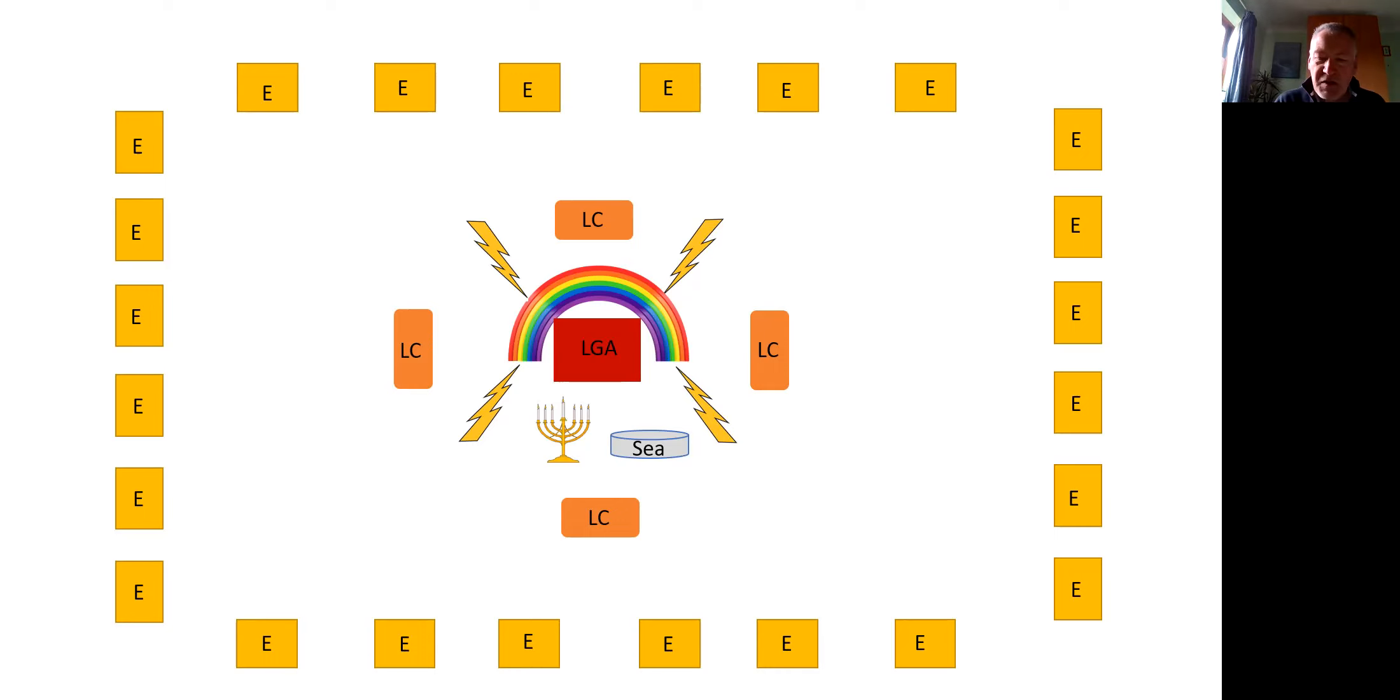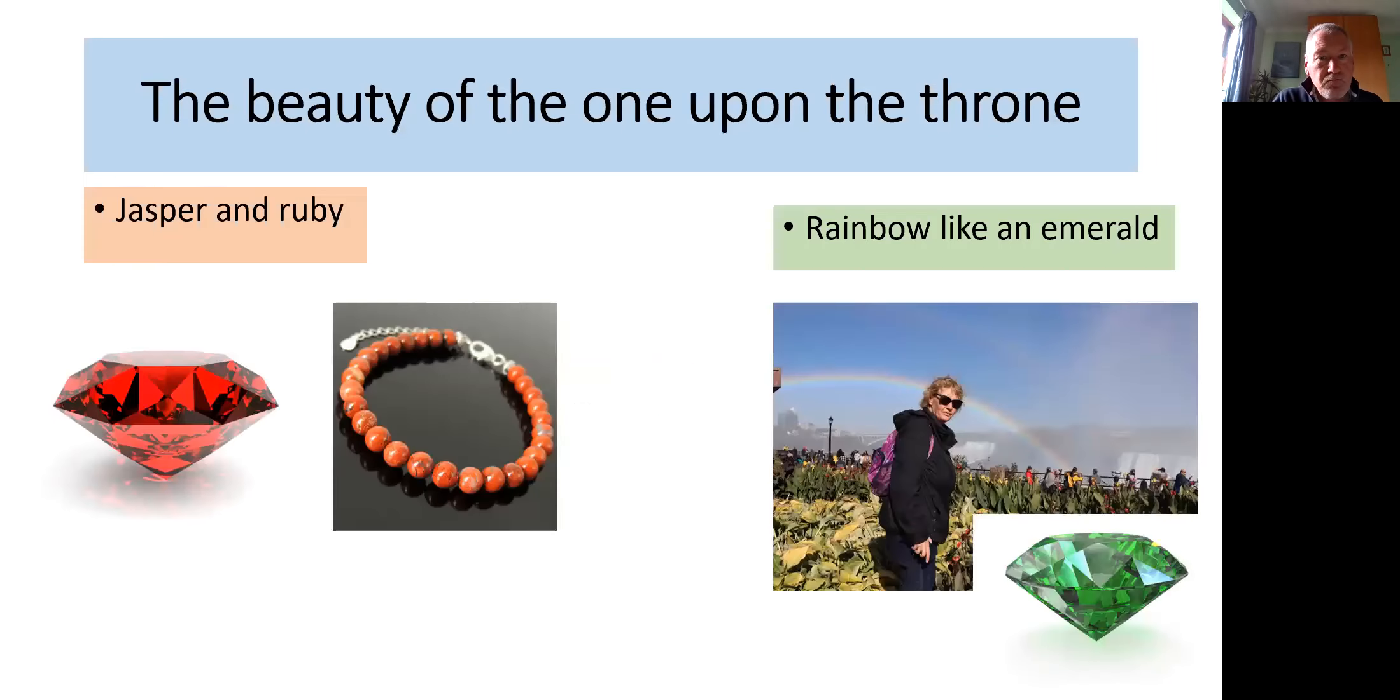But John goes on to describe the scene further. And we might have expected really a detailed description of the one seated on the throne itself. But John resolutely refuses to describe the appearance of God. Instead, he gives an impression which is brief and enigmatic. Beautiful jewels of Jasper and Carnelian are used to describe his appearance. I don't know whether you're familiar with those particular jewels. Most of us probably don't own beautiful jewels. I certainly don't. But when we see them in the shop window or on Antiques Roadshow or whatever, there's often an intake of breath as we wonder at their beauty and their value.